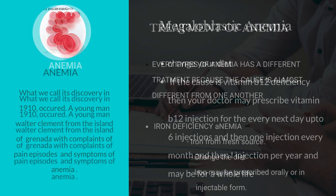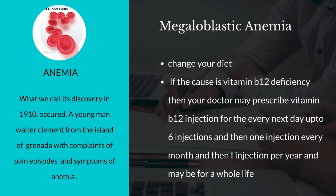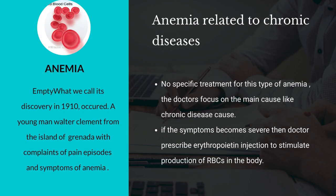Number 2, megaloblastic anemia. Options include: First, change the diet. Second, if the cause is vitamin B12 deficiency, the doctor may prescribe vitamin B12 injections every other day for up to 6 doses, then one injection per month, then one injection per year — possibly for a whole lifetime depending on the condition of the patient.